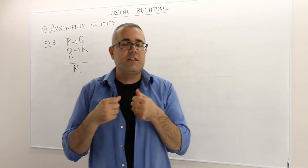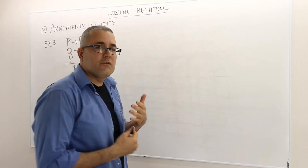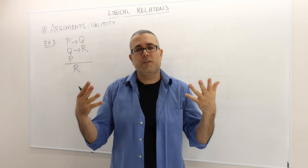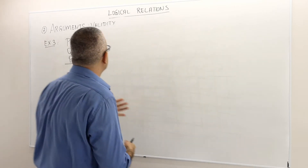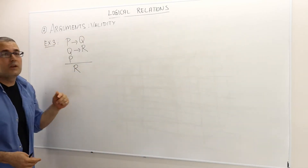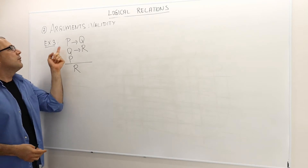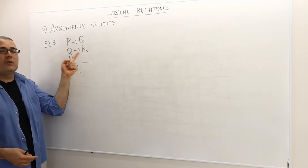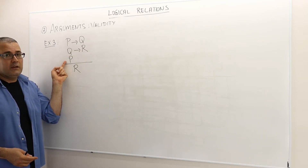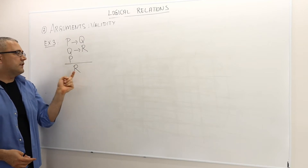This is the third example. Instead of writing the arguments in long sentences, I just very briefly write them as follows. I have three premises: P implies Q, Q implies R, and then P. The conclusion is R.